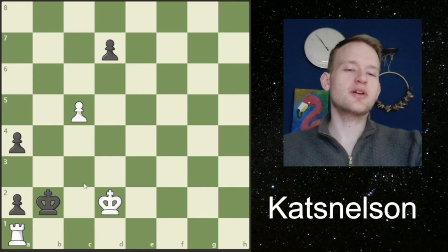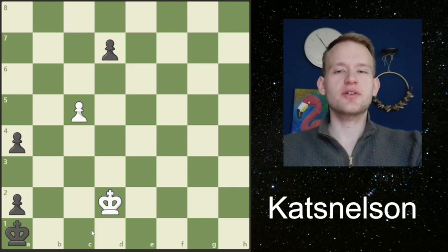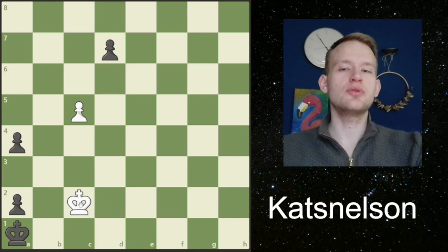Now black has the option to either play a3 or to take here. Both lines will be kind of similar to the line that we've previously seen. But here, in this position, at least there is one last accuracy required of white.